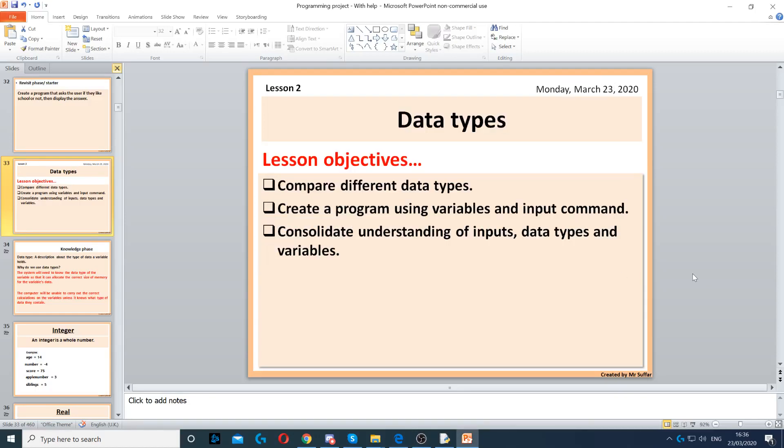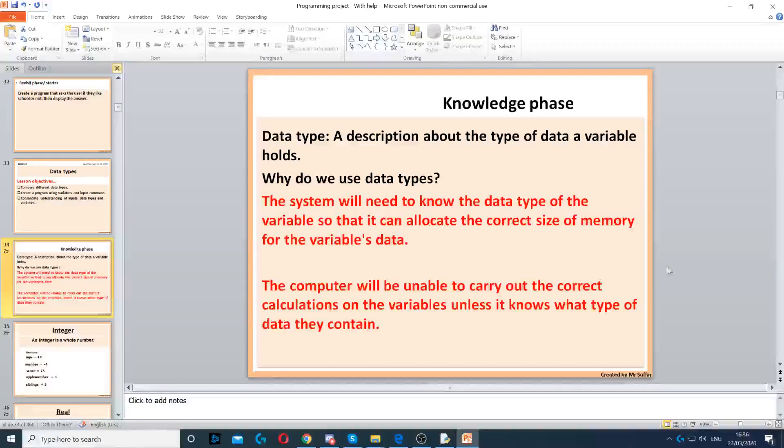Now in this lesson we're going to talk about data types. So data types is just a description about the type of data that a variable holds. It is mainly used to ensure that the calculations are done properly and also it is used to ensure that the correct amount of size is allocated to a memory location. For example, some data types will take more memory than other data types.